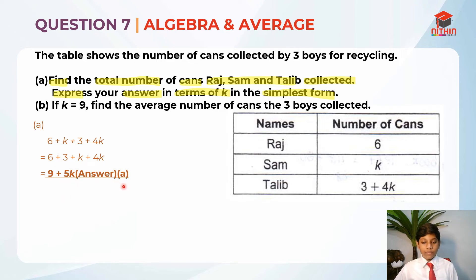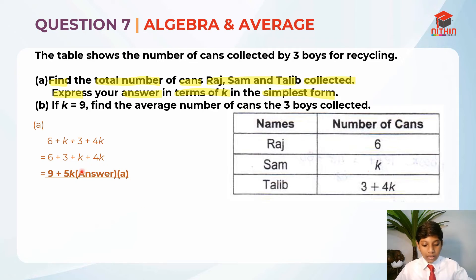So 9 plus 5K is the answer for Part A. I hope you understand my explanation. Now let's move on to Part B.